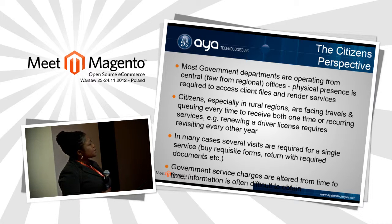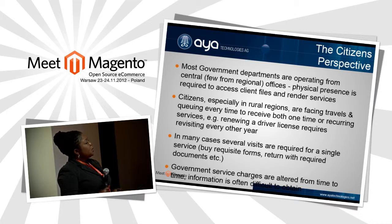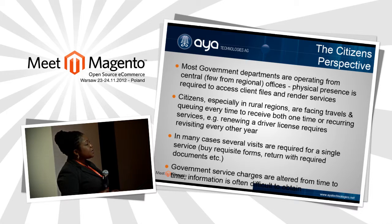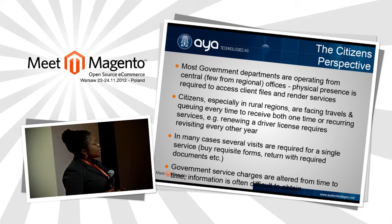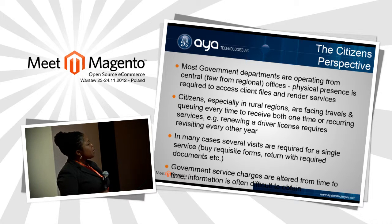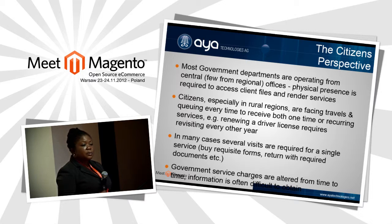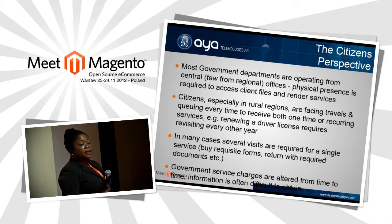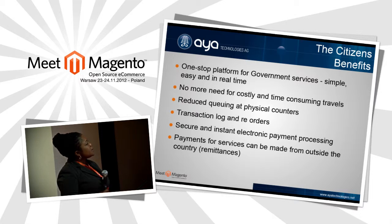Those in rural areas have to travel many hours to receive services. Earlier this year we tried to establish government services online, but realized they come with payments, so we also needed to establish a payment engine to enable citizens to both request services and make payments online. Government service charges are also altered from time to time and information is often difficult to obtain — citizens can travel all the way only to find that fees have changed without their knowledge.